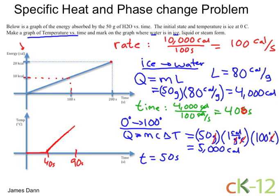Then what happens? Once the water reaches 100 degrees, it'll go from water to steam. And we can figure out how long that would take. We've got Q equals ML.